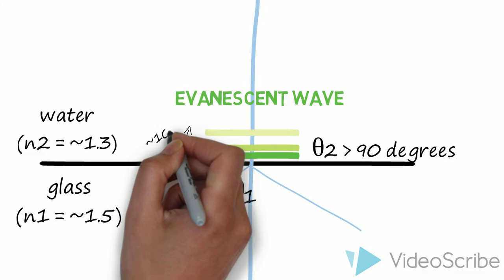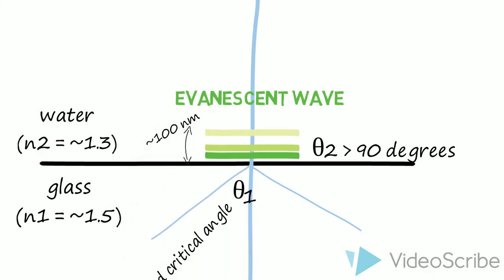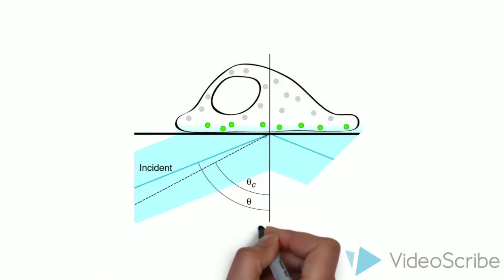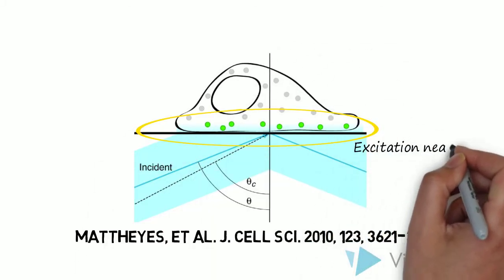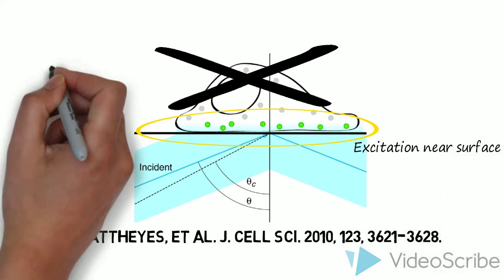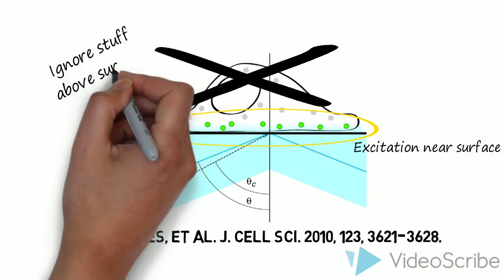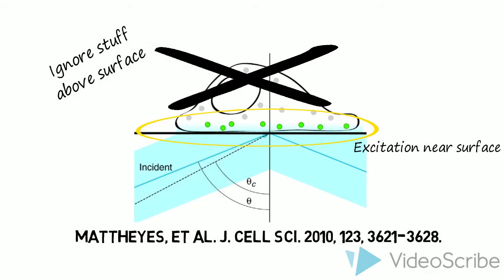This energy source decays exponentially from the interface and travels about 100 nm up into the second medium, which contains your sample. The evanescent wave excites fluorophores near the interface and ignores anything else, whether it be fluorophores in the cell or fluorophores freely diffusing in the solution above.